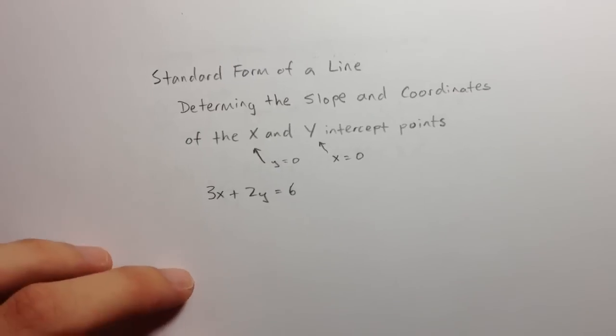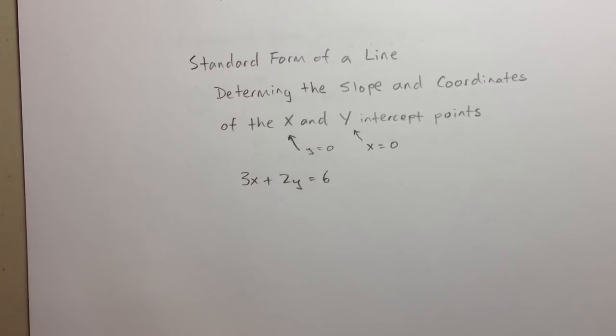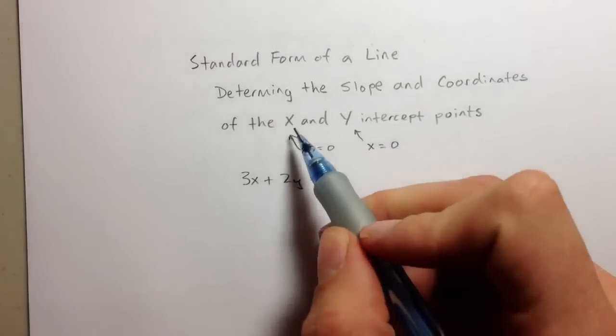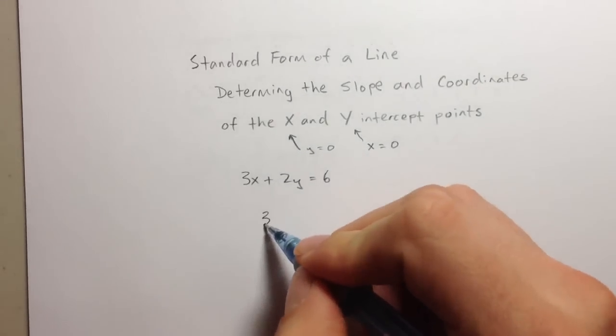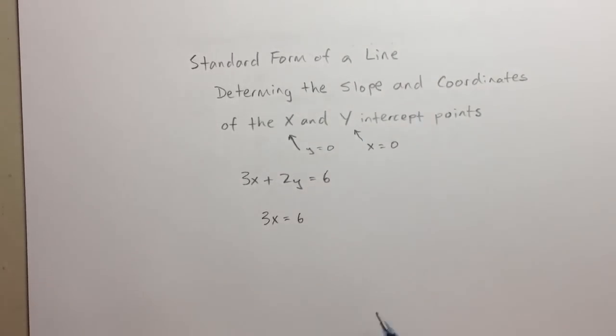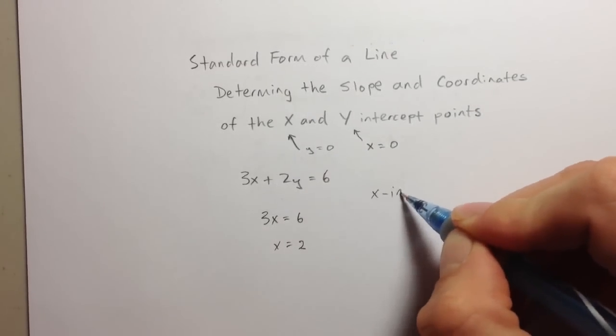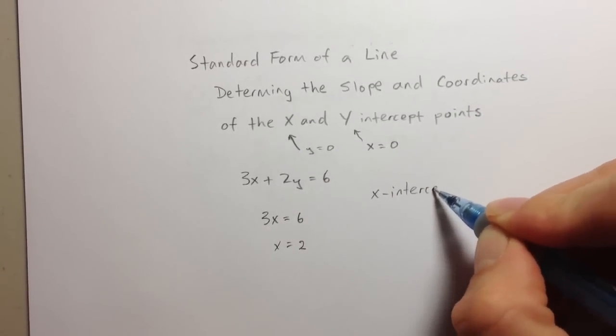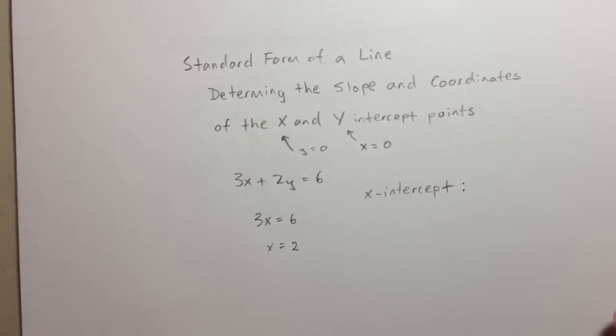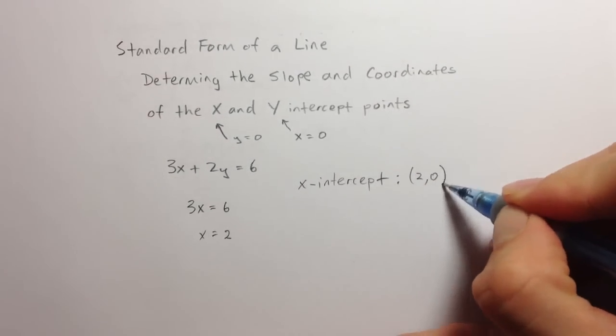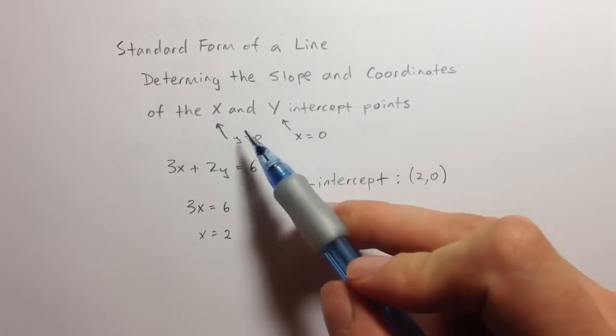Let's go ahead and find the x intercept point first. In this equation I'm going to plug in y equals 0. I'm going to get 3x equals 6, therefore x equals 2. So the x intercept for this equation is going to be 2, 0. I got the 0 from here.